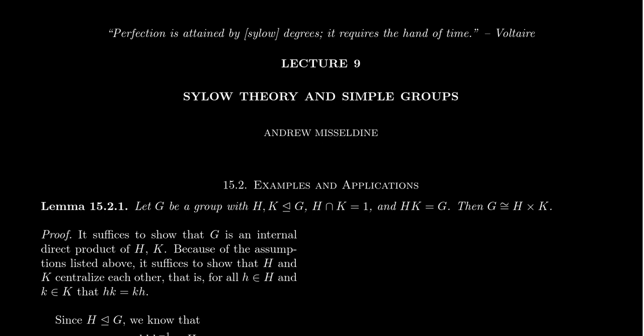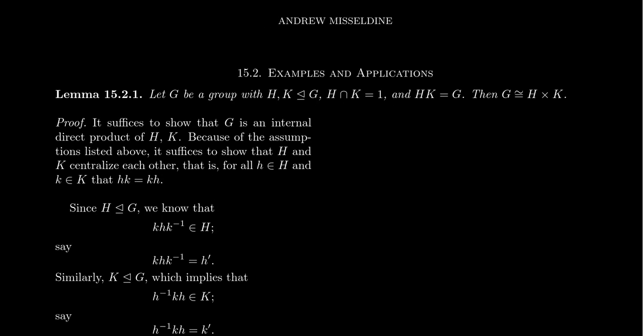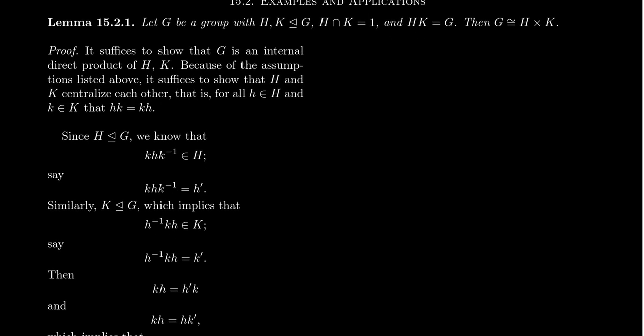The first thing in that goal is presenting a lemma. Suppose G is a group, and H and K are normal subgroups of G, such that H intersect K equals 1 — that is, the trivial subgroup — and the product H times K equals G. If those three conditions are satisfied, then G is isomorphic to H cross K.